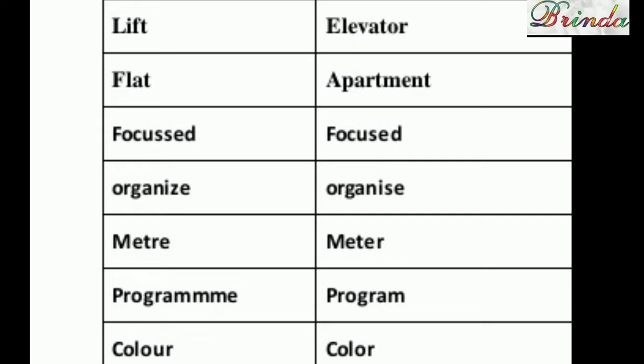Metre — M-E-T-R-E is British English; meter — M-E-T-E-R is American English. Same sound, but the R-E changes to E-R. Next one: programme — P-R-O-G-R-A-M-M-E is British English; program — P-R-O-G-R-A-M is American English, which is shorter.